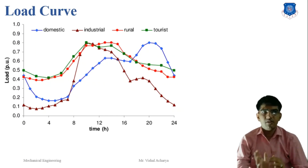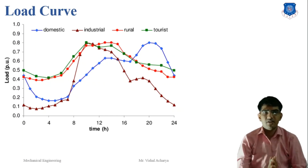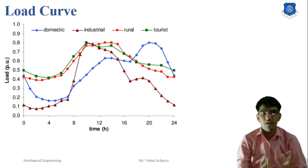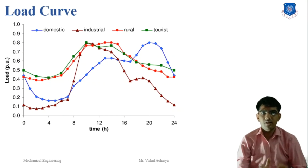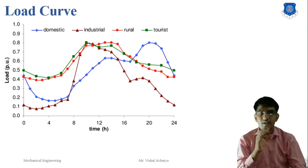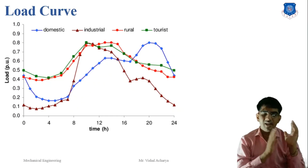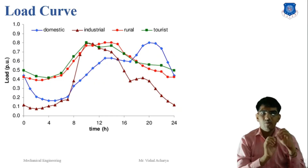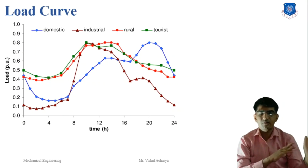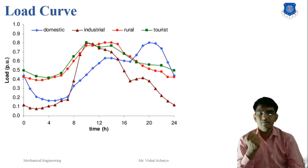It shows the variation of load in the power station. When the load curve is plotted for 24 hours in a day, it is called the daily load curve. If one year is considered, it is called the annual load curve. The load curve of the power plant is not the same for all days — it is different from day to day and season to season. The load curve is mainly classified into two types: summer and winter load curves.